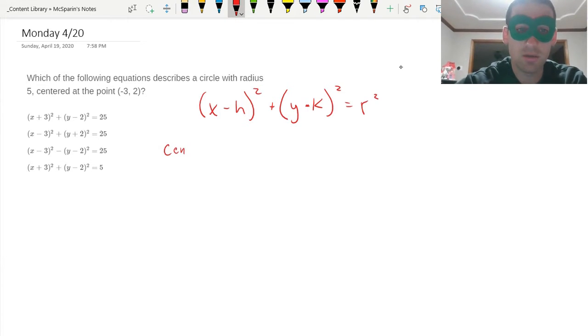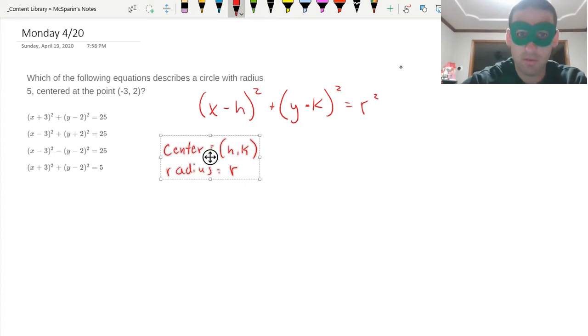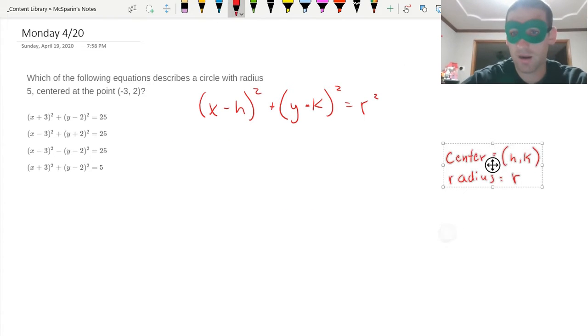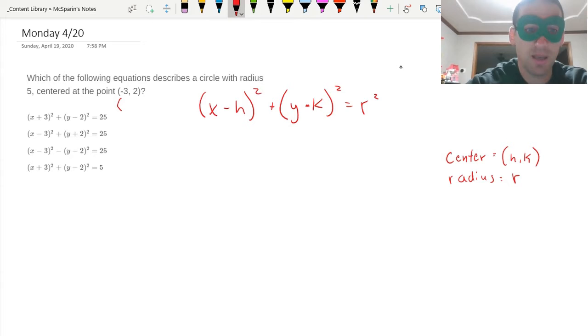The center is (h, k) and the radius is r. Okay, here let's actually do this. I'm going to take those and move them over there, because if I think about the center as being (h, k), well...